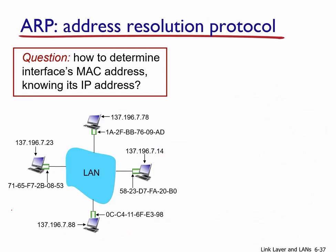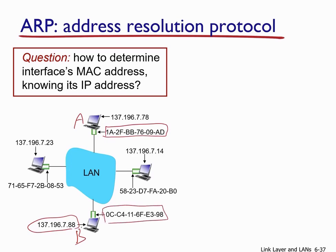How do we determine an interface's MAC address knowing its IP address? If we want to transmit a datagram from host A to host B and we know B's IP address, we must encapsulate the IP datagram within a frame that contains A's MAC address (which we already know) and B's MAC address (which we don't know initially). Therefore, A will use the Address Resolution Protocol (ARP) to obtain B's MAC address. This is done using an ARP request message, which is a broadcast message sent by host A to all other nodes in the network.